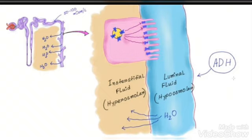That's how the balance is maintained — the equilibrium is maintained. That's how the hormones ADH and aldosterone and the kidney maintain the balance of water.